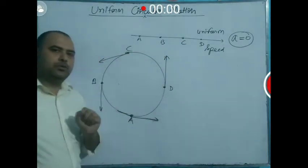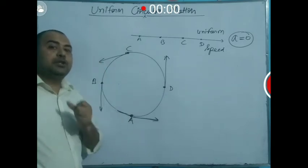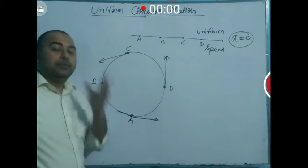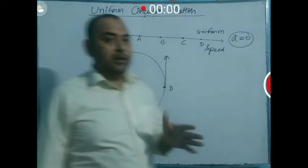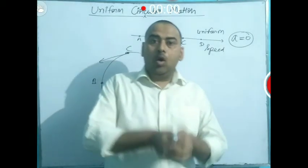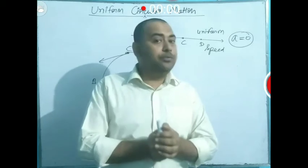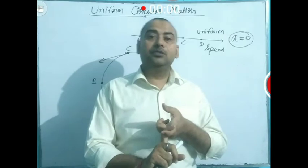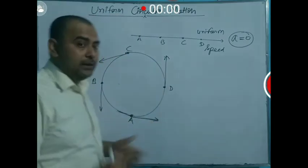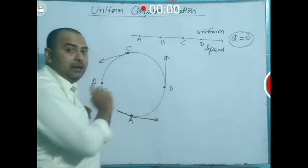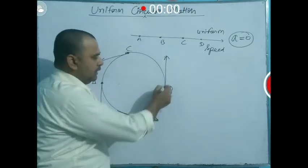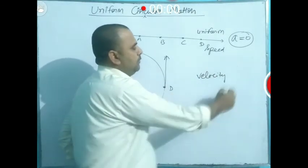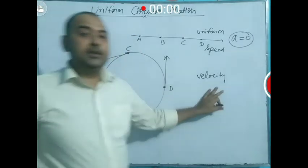The direction is changing at every point on the circle. Because of this change in direction, the velocity is changing. Even though the body is moving on a circular path with constant speed, the velocity is changing because velocity depends on direction.